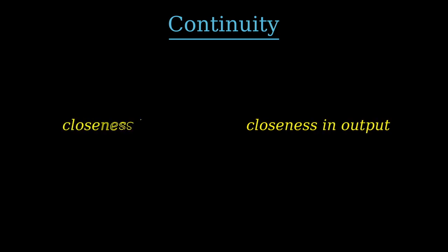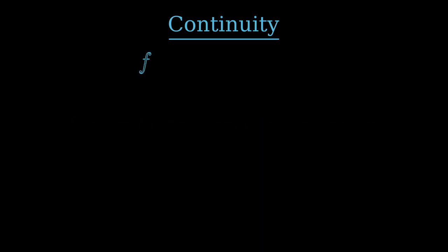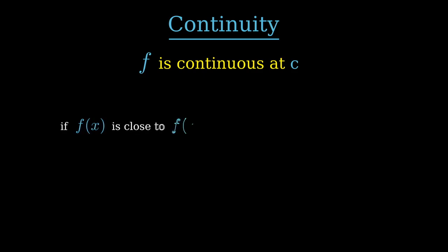This is how continuity is defined rigorously in mathematics. A function is continuous at a point if arbitrary closeness of the output can be obtained from sufficient closeness of the input. That is, a function f is continuous at a point c if the value of f can be made arbitrarily close to its value at c by making the input sufficiently close to c.